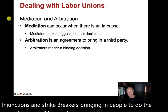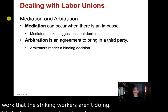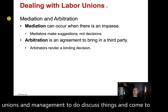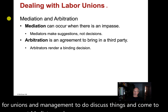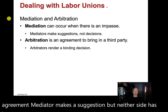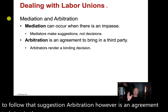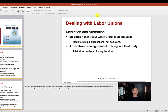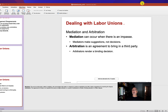Mediation can occur when there is an impasse — it's one way for unions and management to discuss things and come to agreement. A mediator makes a suggestion, but neither side has to follow it. Arbitration, however, is an agreement to bring in a third party whose decision is irrevocable — a binding decision on both sides. And that takes care of unions and labor.